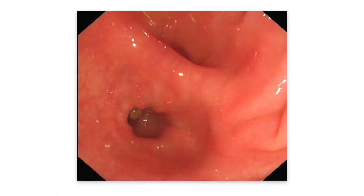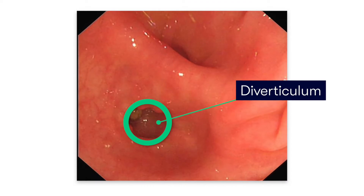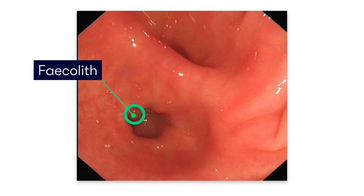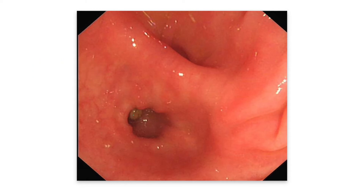If we have a look at this image taken from a colonoscopy, we can see nicely demonstrated a diverticulum viewed from inside the lumen of the colon. Interestingly, in this image we can actually see a small faecolith, or hard bit of feces, that's become lodged within the diverticulum itself.